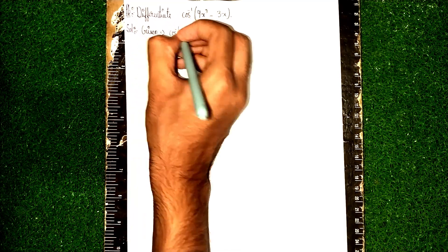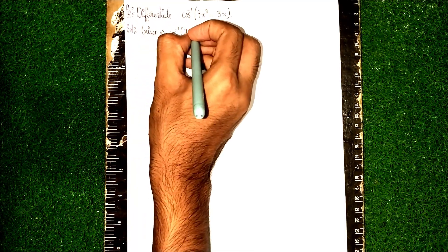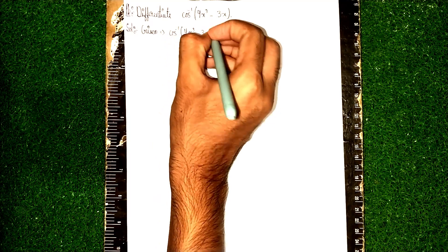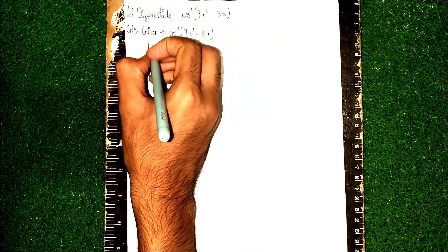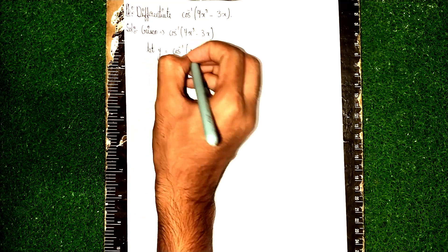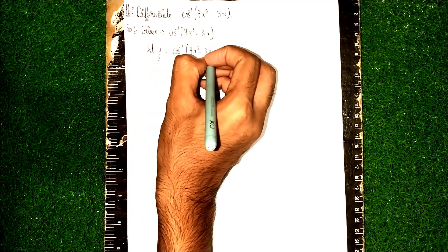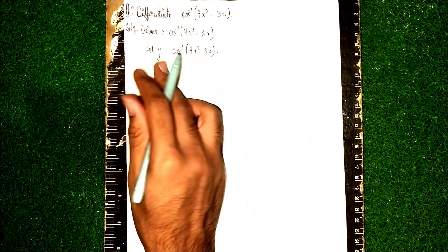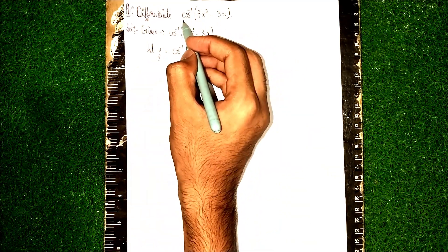Now write here: let y equal to cos inverse of 4x³ - 3x. Afterwards, we have considered this question as let y.